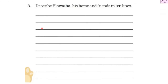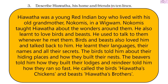Now let's answer the third question: describe Hiawatha, his home, and friends in ten lines. Hiawatha was a young Red Indian boy who lived with his old grandmother Nokomis in a wigwam — a type of house. Nokomis taught Hiawatha about the wonders around them. He also learned to love birds and bees and used to talk to them whenever he met them.